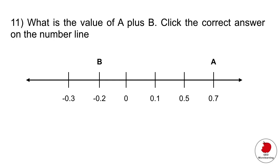The next question is a hotspot problem where you interact with a number line. It asks for the value of A plus B, then you click the correct answer on the number line. A plus B would be 0.7 plus minus 0.2, which equals 0.5. You would click on that spot on the number line.